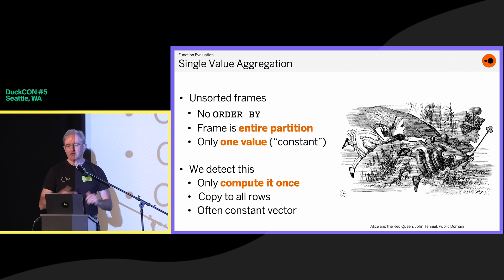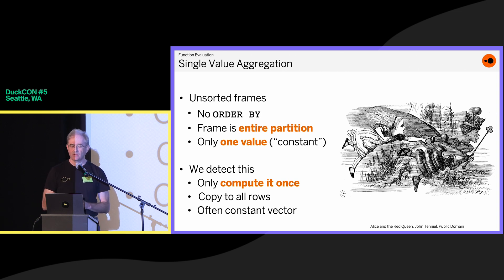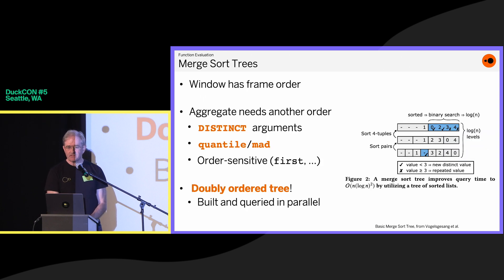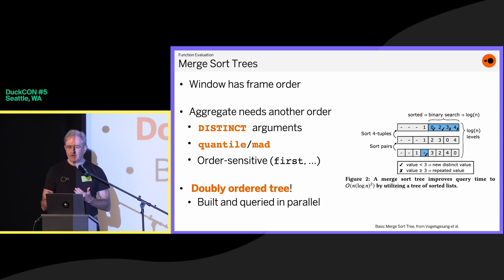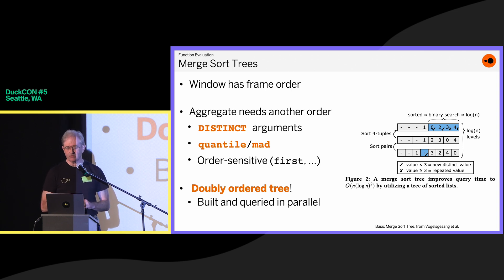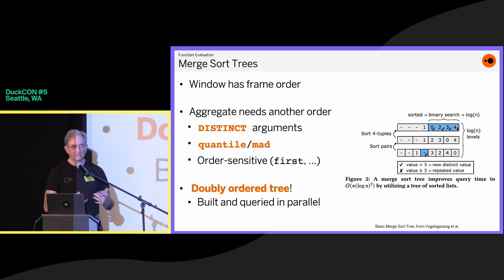With single value aggregation, a lot of times people have a partition with no ordering, which just means you have one aggregate value for the entire partition — so you only need to compute it once and then copy it. Also, the window has a framing order but some aggregates need a different order. If you want to do distinct aggregates, it helps to have them sorted so you can see when two values in a row are the same. For quantiles and the mad aggregate function, this also applies. So we have a data structure in there — published a couple of years ago on doubly ordered trees — which can be built and queried in parallel.